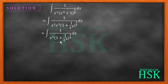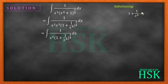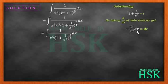Now I can perform a very simple substitution. I'm going to substitute 1 plus 1 upon x to the power of 4 as equal to t. On differentiating, I'm going to get minus 4 upon x to the power of 5 dx as equal to dt. There should be no problem in this differentiation at this level.